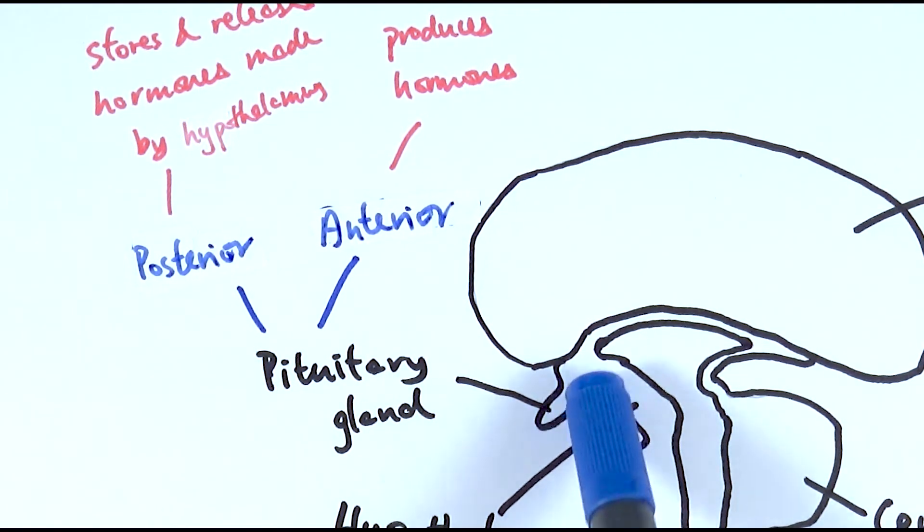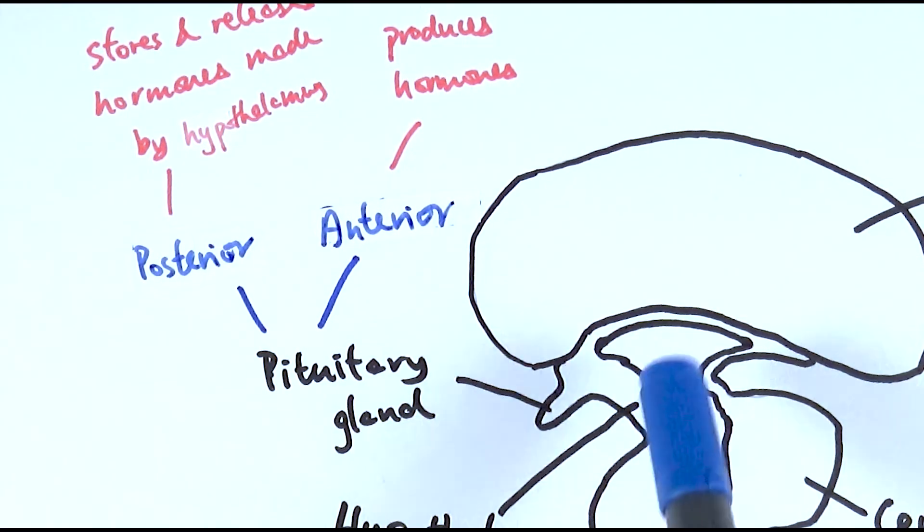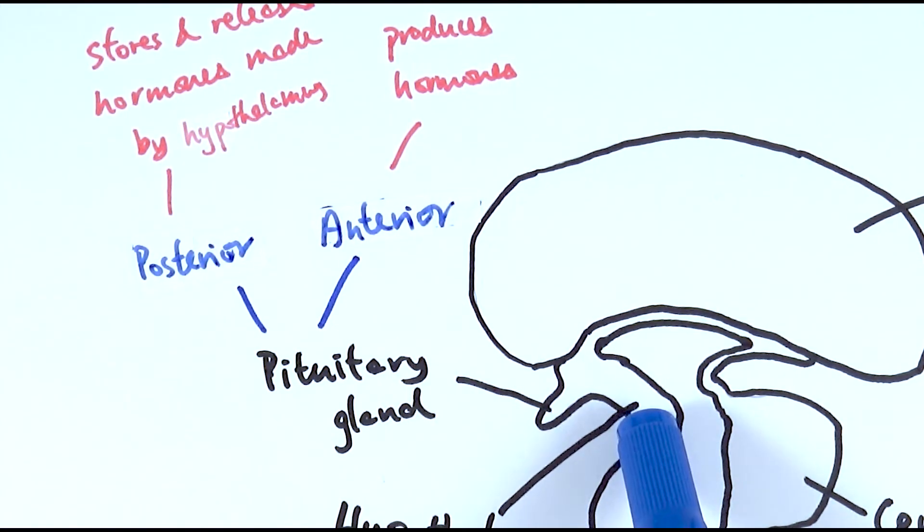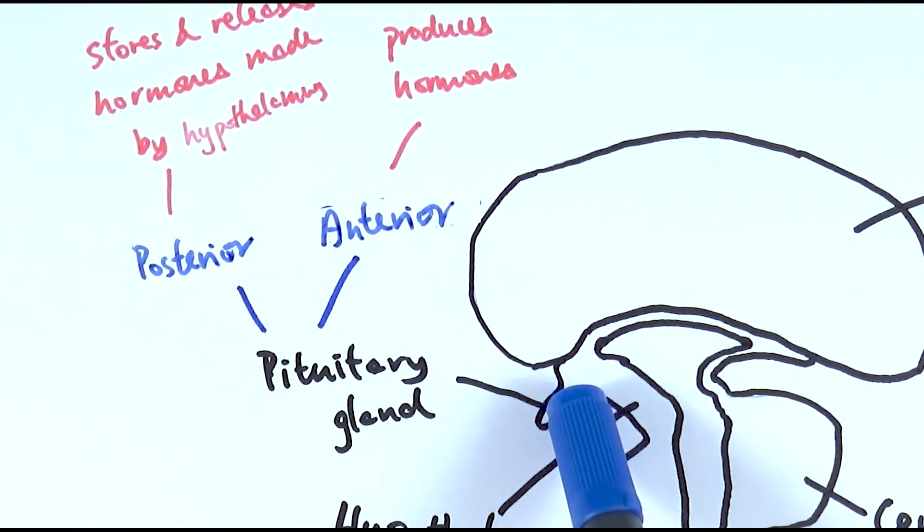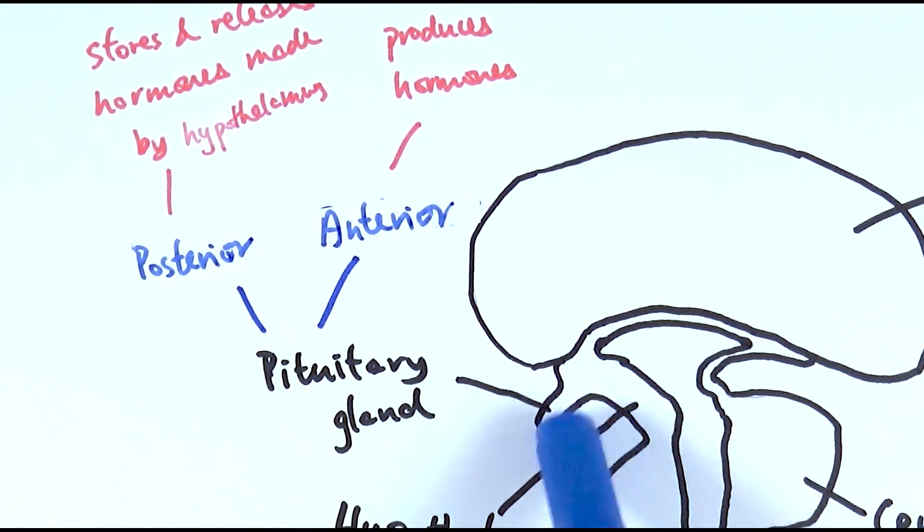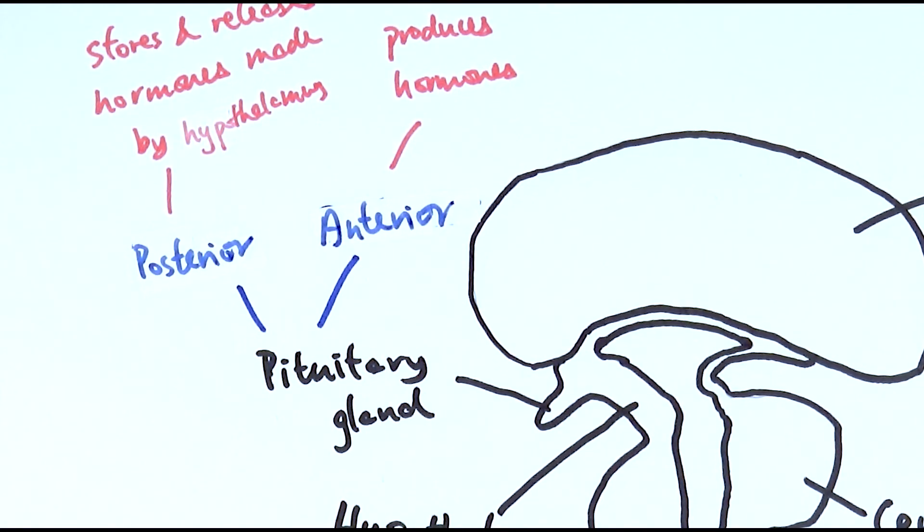And then the back part of the pituitary gland, which is the posterior one, it's closer to the hypothalamus, meaning that it can store and release any hormones that's made by the hypothalamus. So they'll be moved to the back, the posterior pituitary gland, to be released as well, and these are things like ADH, which is a hormone that is going to travel to the kidney to control the amount of water that is reabsorbed by the kidneys.